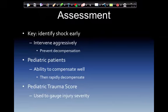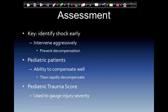Key assessment points: identify shock early and intervene aggressively. Step it up if needed — for example, instead of starting an IV, you may go directly to intraosseous access. Prevent decompensation at all costs. Pediatric patients compensate very well, and then they decompensate, circle the drain, and go into asystole. This is largely due to the increased sensitivity of the pediatric's blood vessels to circulating catecholamines — when catecholamines stop working, they can't shunt toward the core and they fall off the edge of the cliff.